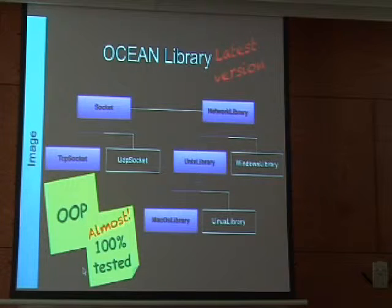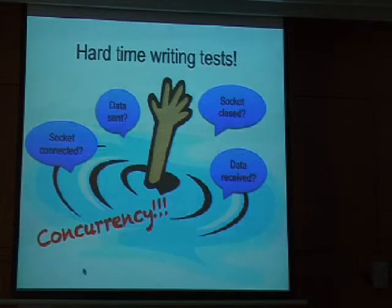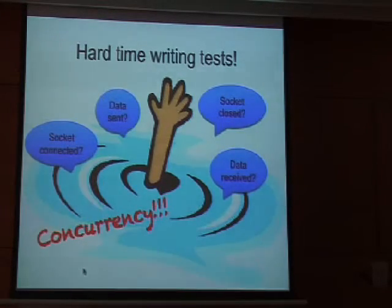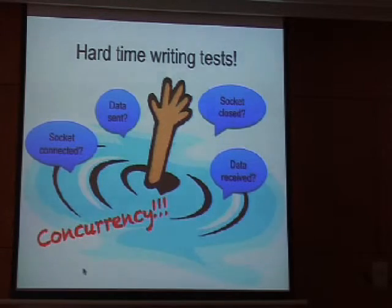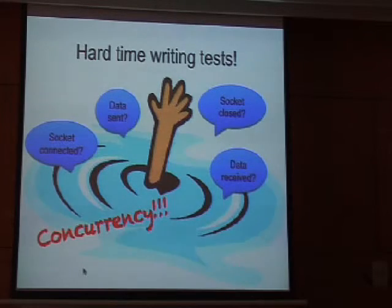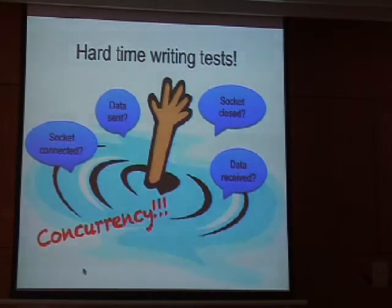One reason we didn't reach 100% test coverage yet is because writing real tests is hard. We want tests that really check that there is data going through the network layer of the operating system. We didn't want to emulate or mimic the network layer. We needed to verify that what we have at the image side is an actual representation of what is happening at the operating system. Starting from scratch, we could not just consider the existing library as reliable, so we had to build our own tools — figuring out how to connect to the operating system, to find out whether the socket is connected, whether the data sent is actually received.